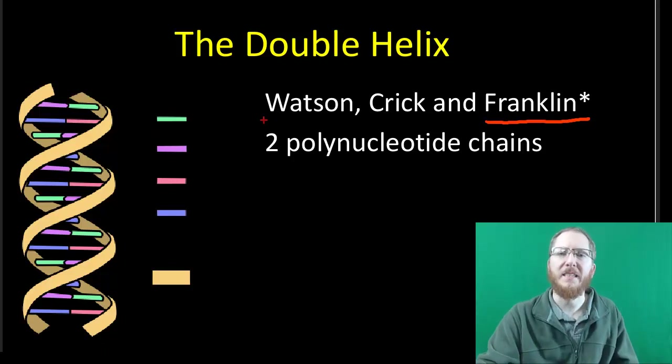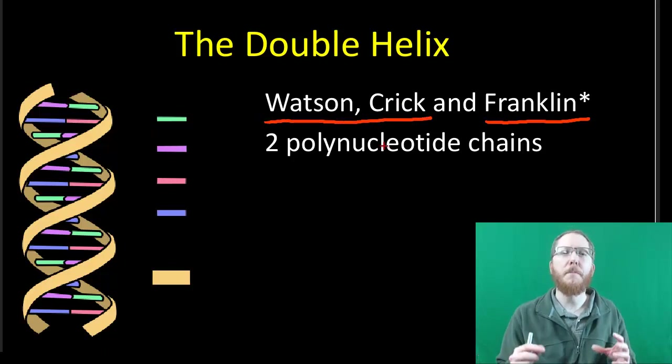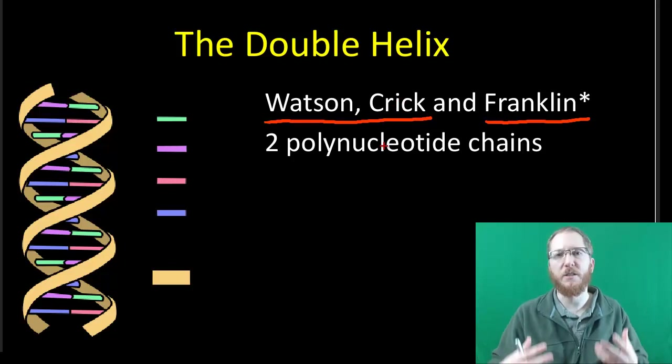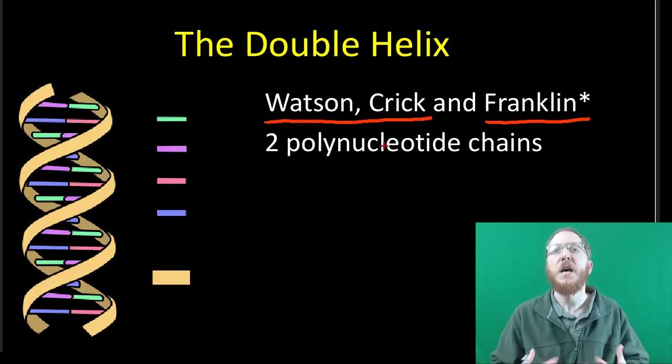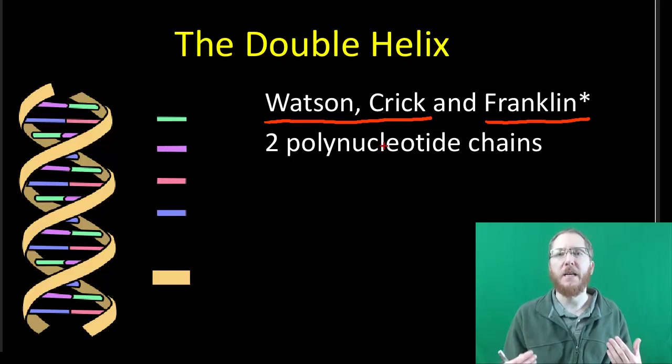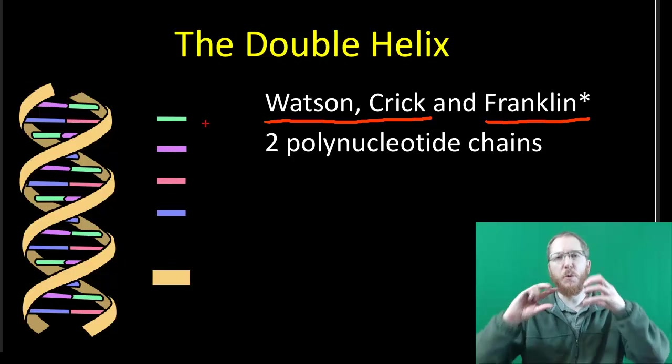Watson and Crick were two scientists that used this data from Rosalind Franklin to allow them to build different models until they eventually discovered the double helix, which is the shape and the structure of DNA that we now know. And they were able to use her data to prove that they were correct.